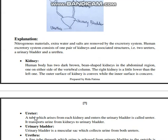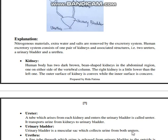Next is the ureter. A tube which arises from each kidney and enters through the urinary bladder is called the ureter. It transports the urine from the kidney to the urinary bladder. There are two small tubes attached to the kidney that open into the urinary bladder and transport urine directly there.